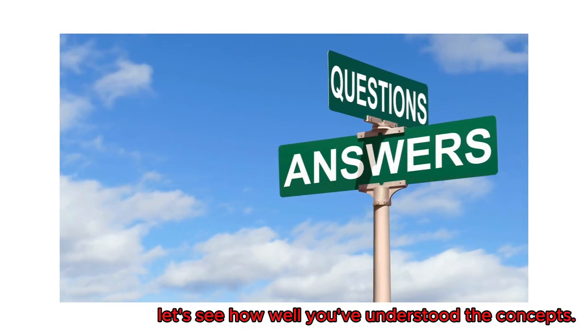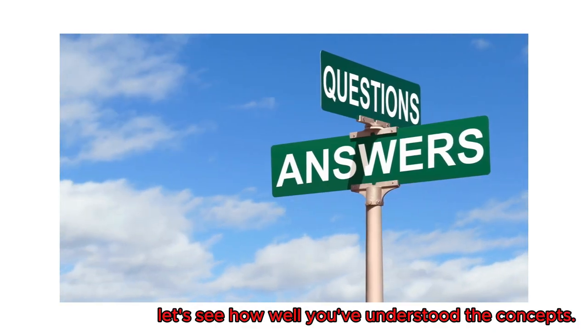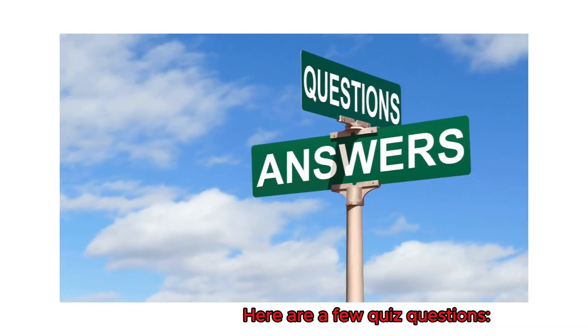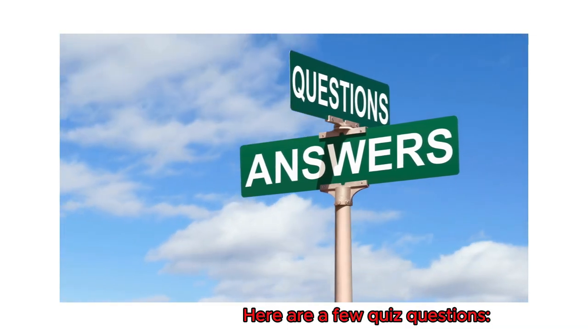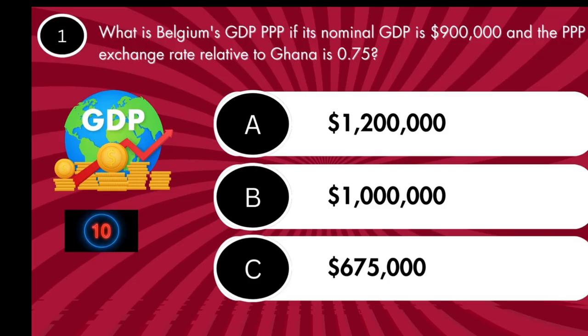Before we wrap up, let's see how well you've understood the concepts. Here are a few quiz questions. Question 1: What is the GDP PPP of Belgium if its nominal GDP is $900,000 and the PPP exchange rate relative to Ghana is 0.75?